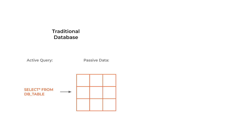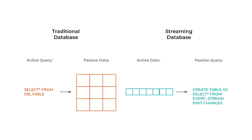What is a streaming database? It's like a traditional database flipped on its head. With a traditional database, most of the hard work happens at read time when it executes your query and scans your data. A streaming database, by contrast, does almost all of its work at write time. Your data is immediately processed as it's received and used to update the results of any registered queries.